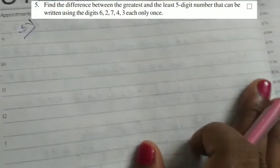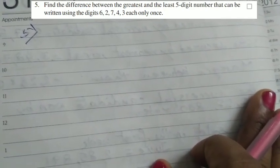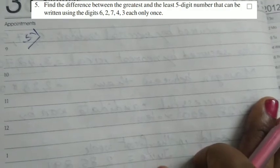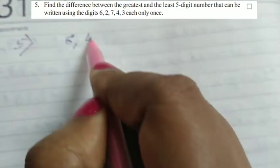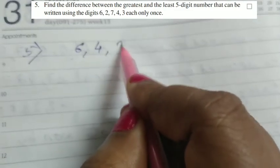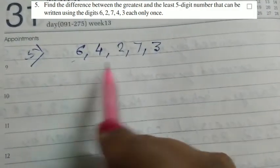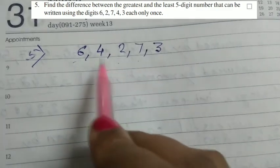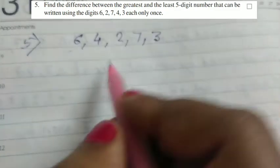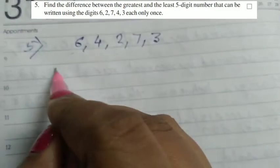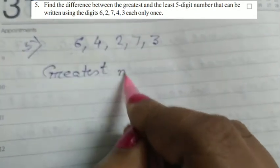The question says, find the difference between the greatest and the least number that can be written using the digits 6, 4, 2, 7, 3. The digits are 6, 2, 7, 4, 3. There was some change in writing the digits, so it's okay. First I will have to find the greatest number. What is the greatest number using these digits?